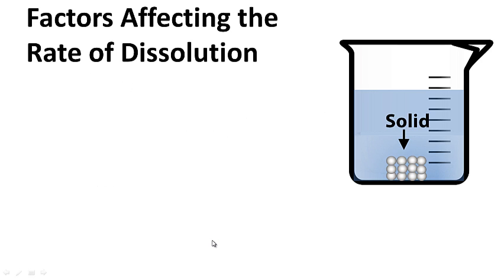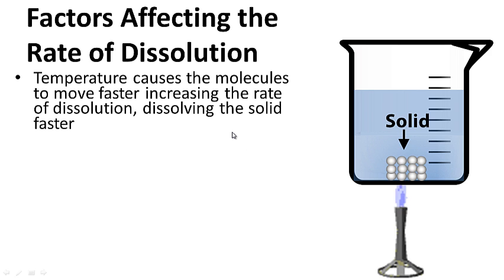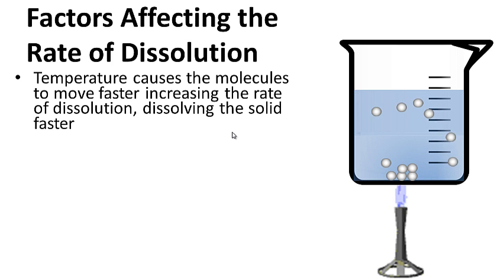Factors affecting the rate of dissolution or dissolving. We have a solid here — what are some ways we could speed up and make the solid dissolve faster? One way is temperature. Temperature causes the molecules to move faster, increasing the rate of dissolution and dissolving the solid even faster. So if we increase the temperature, the solid will dissolve even faster.